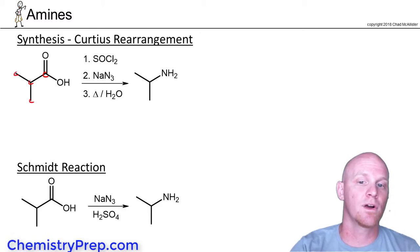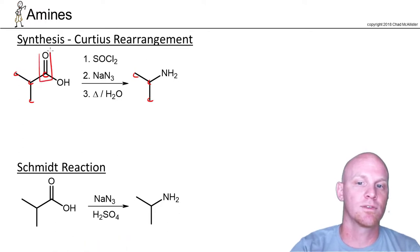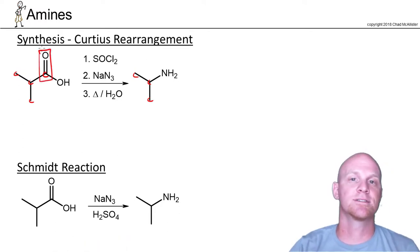We have four carbons in the reactants, we only have three carbons in the product. And again, we're going to lose this carbonyl group in the process, as well as the OH becomes an NH2 along the way. So take a look at the way this works.